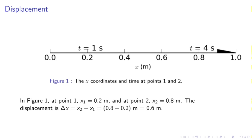Displacement. Displacement can be depicted by motion along a straight line. For example, we can consider an object at t equals 1 second located at x equals 0.2 meters, and at t equals 4 seconds at 0.8 meters. Displacement is x2 minus x1 equals 0.6 meters.